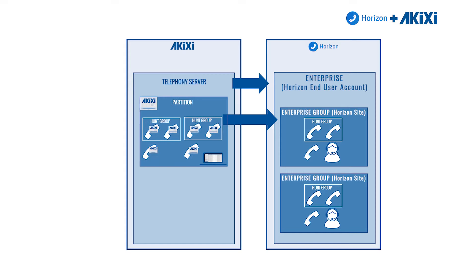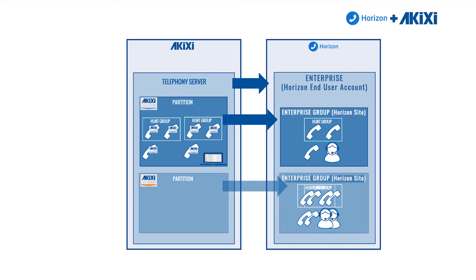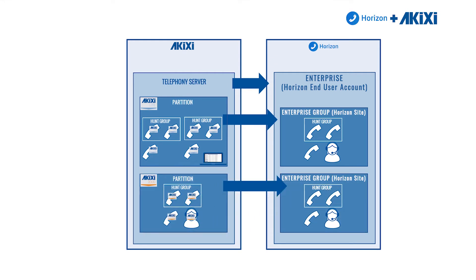We can now create the second partition, and this partition is going to connect directly to the bottom enterprise group. Exactly as we did before: apply a site license, make the connection and synchronize. The thing to bear in mind for this configuration is that for each partition a device is being monitored on, it will require a subscription for that partition.